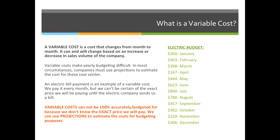Variable costs make yearly budgeting difficult. In most circumstances, companies must use projections to estimate the cost for these cost centers. An electric bill payment is an example of a variable cost — we may pay it every month, but we can't be certain of the exact price until the electric company sends us the bill. Variable costs cannot be 100% accurately budgeted for, but we can use projections to estimate the cost. That's when you take the entire year and say, last year I spent $10,000 on my electric bill, so I'll probably spend $10,000 this year.